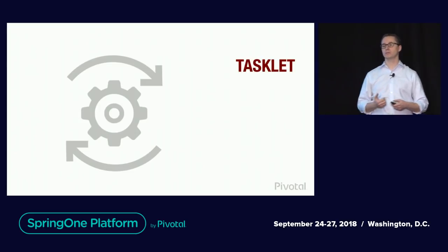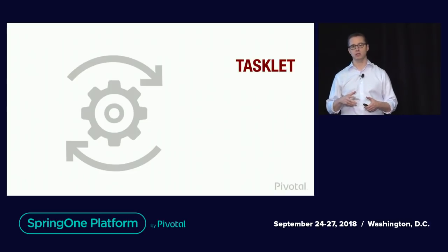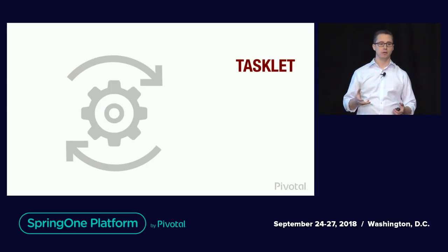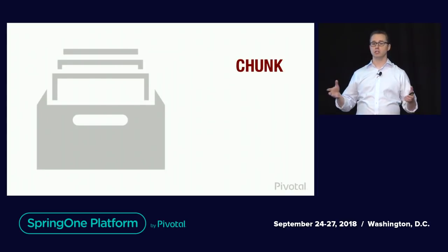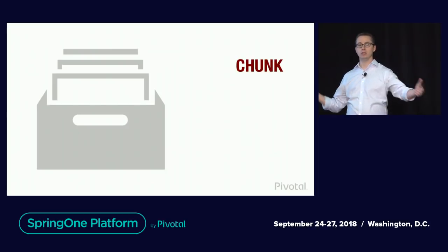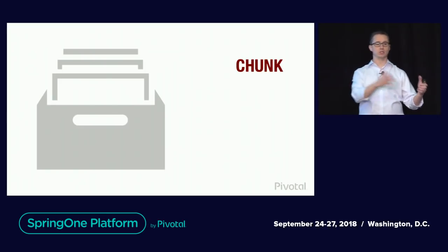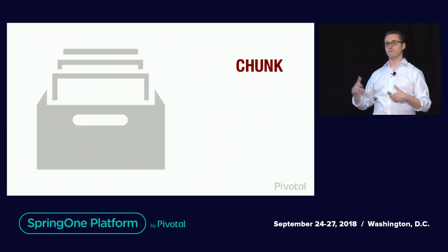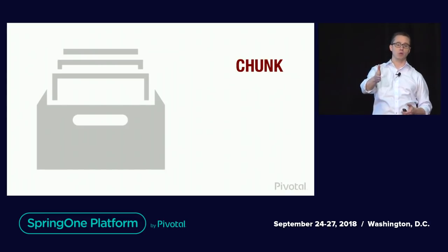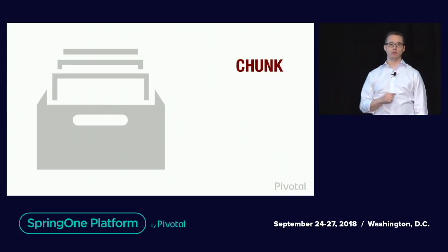We provide a couple of custom tasklets. The main one we'll be talking about today is the chunk-oriented tasklet — that's where you get chunk processing. A chunk is a chunk of data. If you want to process a million records, you probably don't want to process all those in a single transaction. You want to divide those up into smaller transactions and commit along the way, maintaining state so that if something fails, you can go back to the best known state instead of restarting from day one.